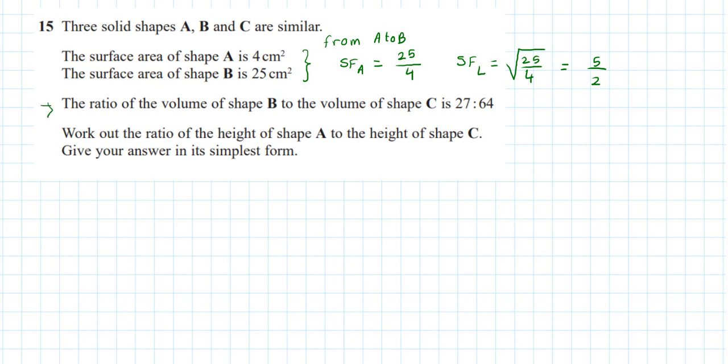Okay, now we come to this line here. The ratio of the volume of B to the volume of C is 27 to 64. So that's B volume to C volume is 27 to 64. Now if I was to cube root this, I would get B length to C length. So cube root of 27, volume is 3 dimensions and length is 1, to cube root of 64. So that would be 3 parts to 4 parts.